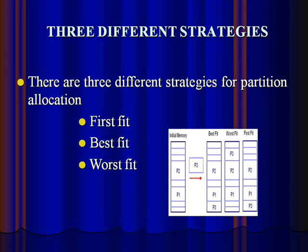There are three different strategies for partition allocation. The first one is First Fit, the second one is Best Fit, and the third one is Worst Fit.